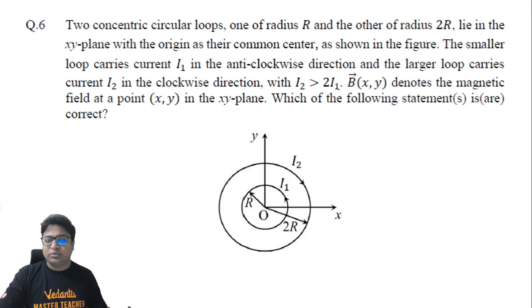We've been told that I2 is more than 2I1. Now I'll begin by discussing the magnetic field at the center of the two loops. This would be written as mu naught I1 by 2R minus mu naught I2 by 2 times 2R.